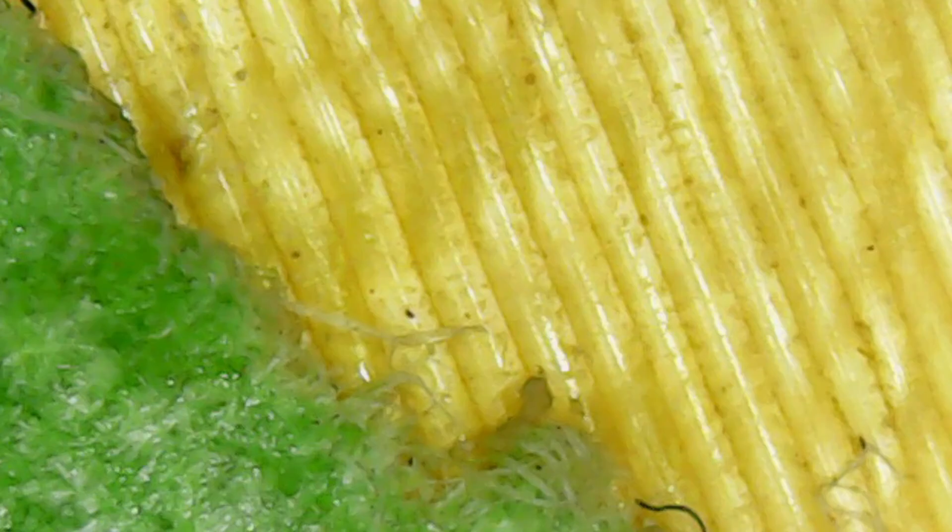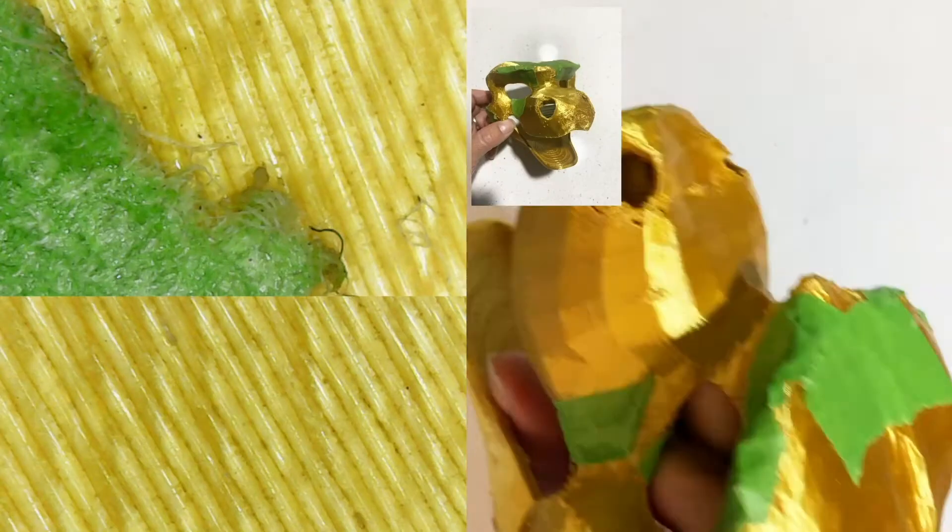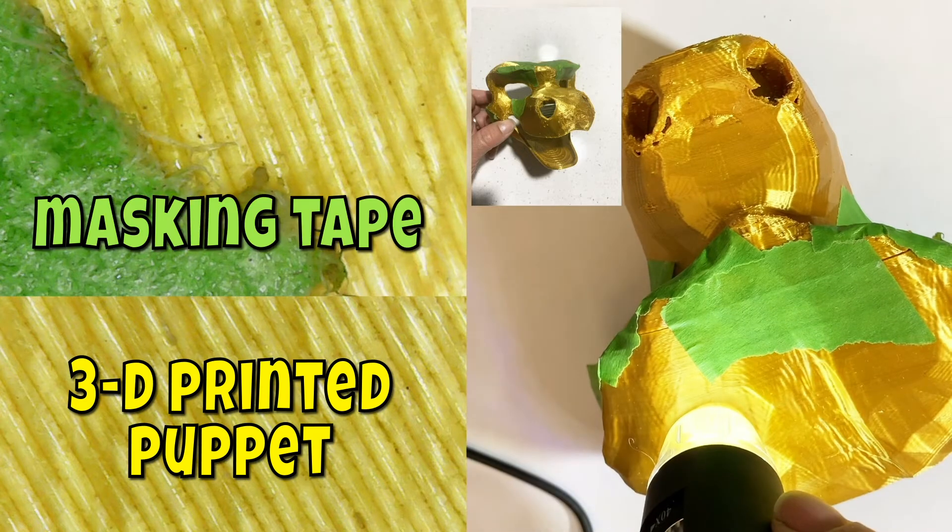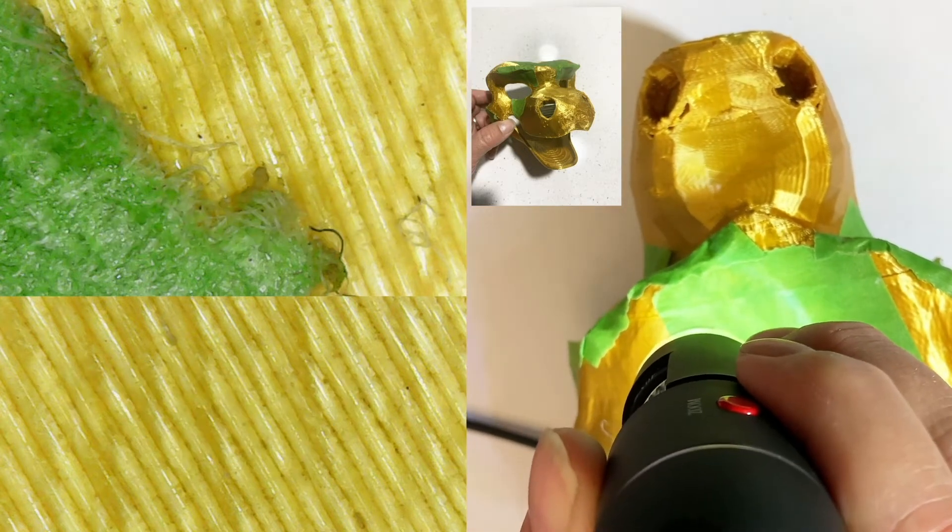I feel like it's part of our recording place. You do? Because of the yellow. It looks like a chip. It does look like a chip. The green part is the tape. It's the 3D printed dragon head.